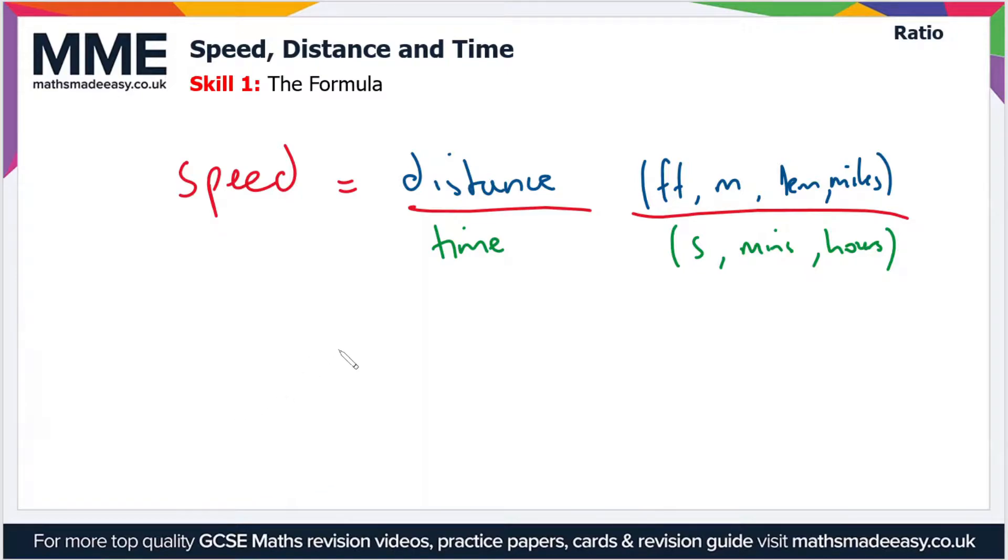So in terms of the units for speed then, what we end up with are units in terms of feet per second, metres per second, you could get metres per minute, metres per hour, but you'd more commonly see metres per second. You may be familiar with miles per hour.